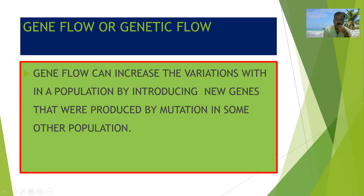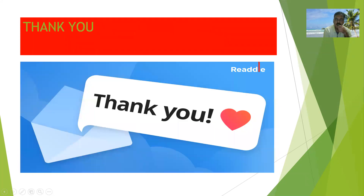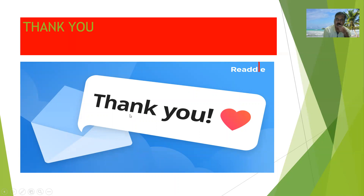Gene flow can increase the variations within a population by introducing new genes that were produced by mutation in some other population. That is why gene flow creates genetic variability in organisms. This genetic variability causes a lot of mutations, and mutations and variations are the raw material for evolution. This is the gist about genetic flow.